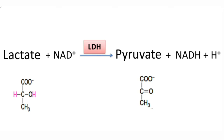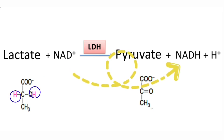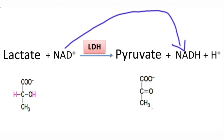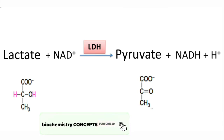An example of an oxidoreductase is lactate dehydrogenase, which can interconvert lactate and pyruvate. In the conversion of lactate into pyruvate, the hydrogens from lactate are taken up by NAD+, which is converted into NADH. So lactate (reduced) is converted into pyruvate (oxidized), and the oxidized coenzyme NAD+ is converted into reduced NADH. The substrate is oxidized and the coenzyme is reduced — this is an oxidation-reduction reaction.